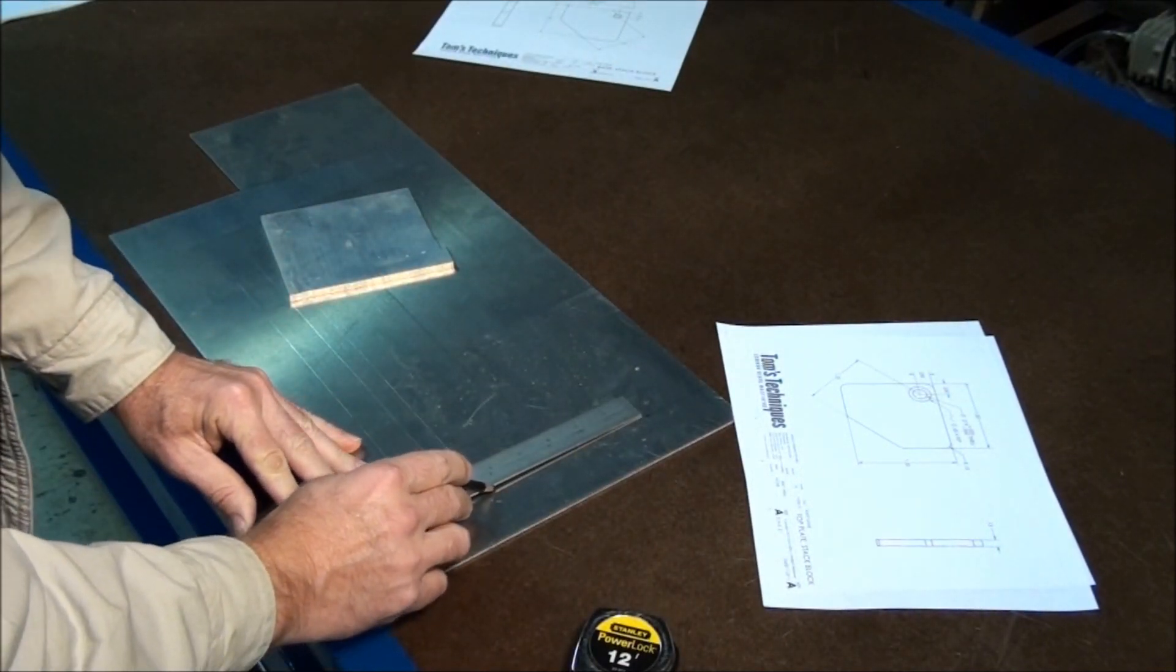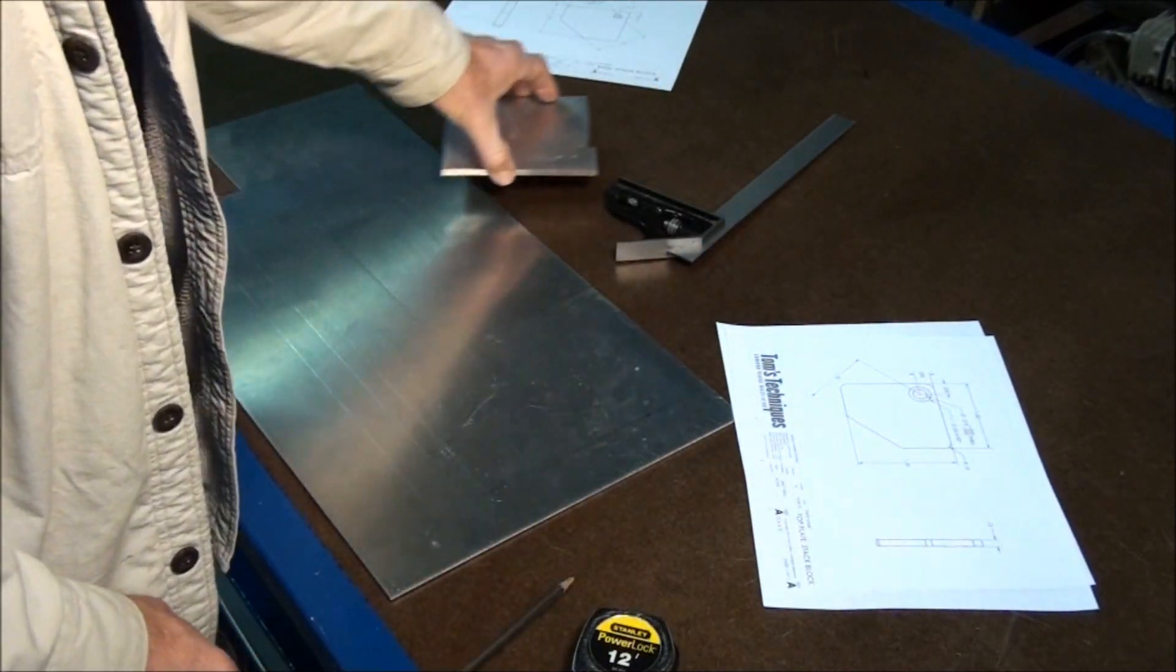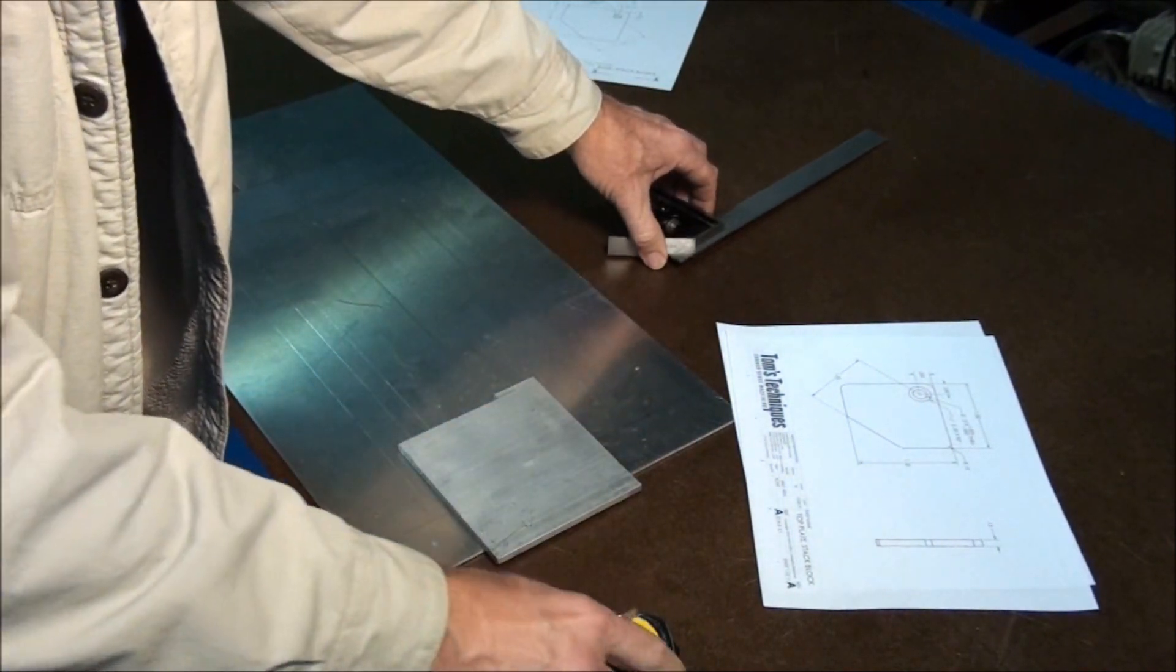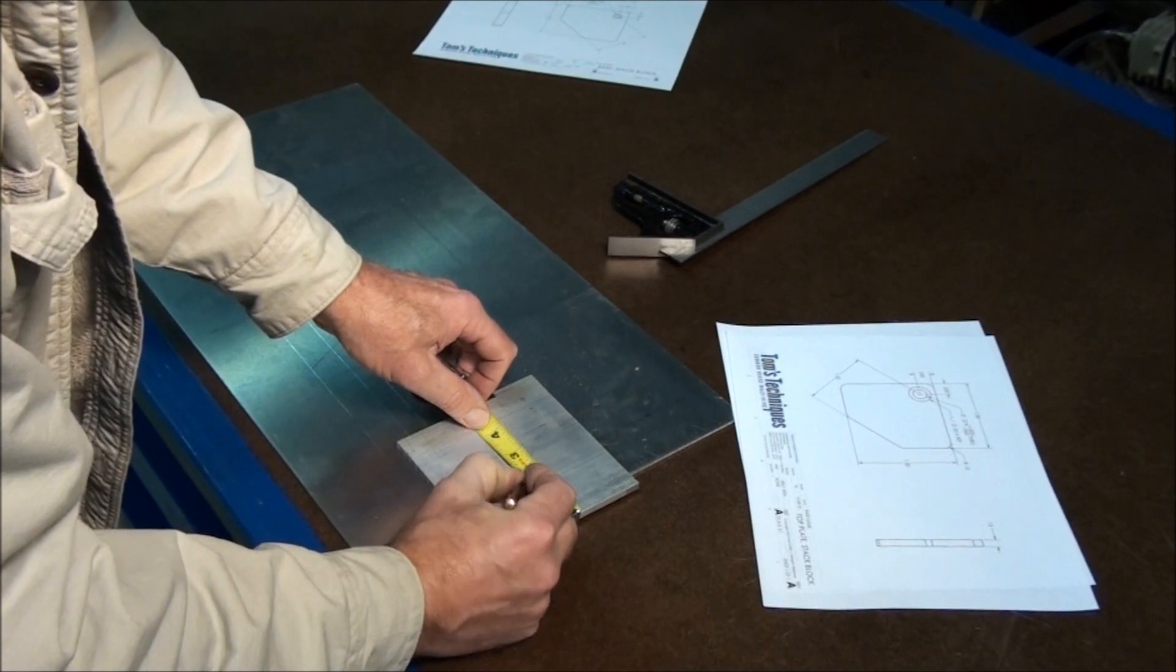We don't need to lay them all out, and I'll show you why in a minute here. All we need to do is lay the first one out. While we're at it, let's go ahead and do the same thing for the ¼ inch part, or the thicker part, the 219 thousandths, to save a little time.